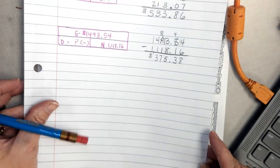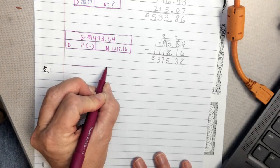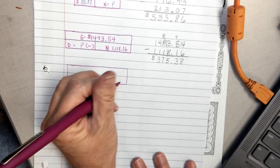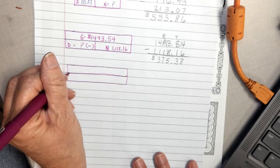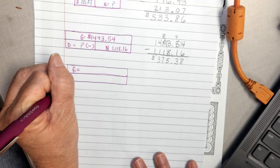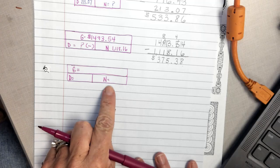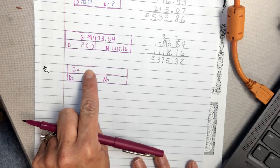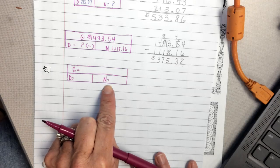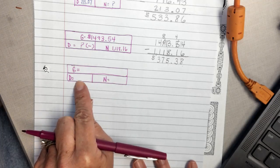So I'm going to go back to my paper and I'm going to build my model. I'm going to split my model just like we've done before and I'm going to write GDN because net plus deductions gives you gross. If you have gross and you have deductions, you can subtract to find the net. And if you have gross and net, you can subtract to find the deductions.